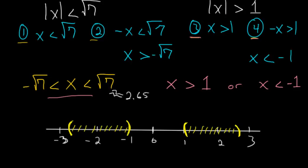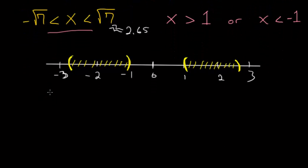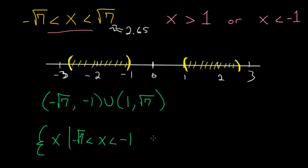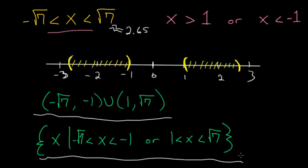There are a couple different ways to write this solution. We can say the solution is from negative square root of 7 to negative 1, with open parentheses, union 1 to square root of 7. Or using set notation, we write the set of x such that x is bigger than negative square root of 7 and less than negative 1, or x is bigger than 1 and less than the square root of 7. Either of these would be the correct answer.